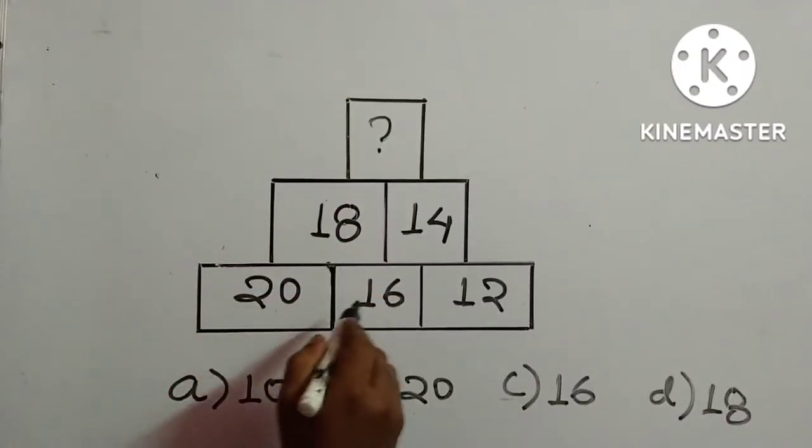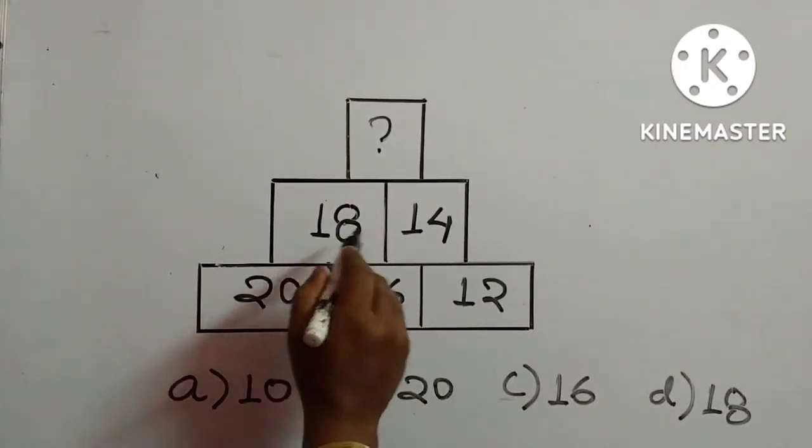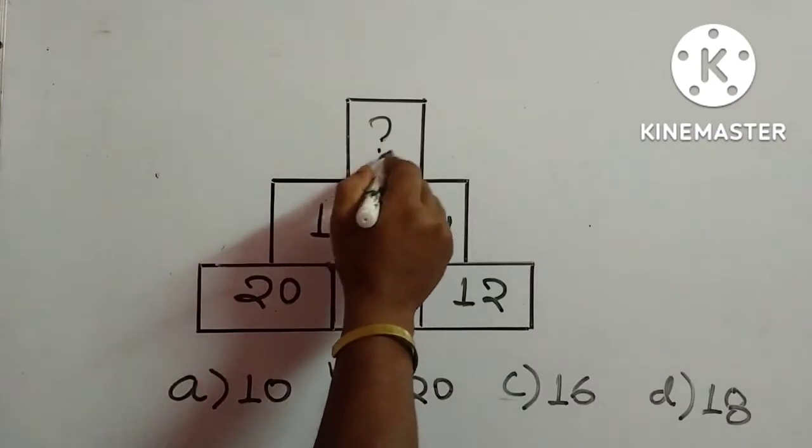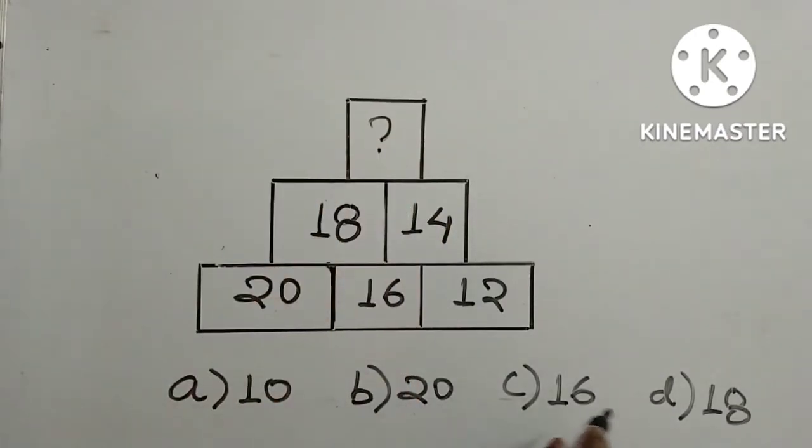In this figure, we have 20, 16, 12, 18, 14 and we have to find out this number and the four options are given.